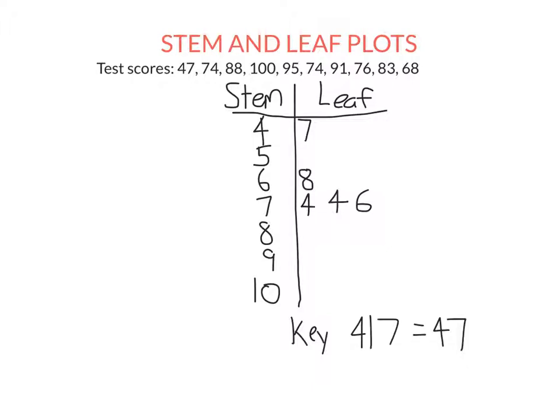So for the 80s, we have 88 and 83. For the 90s, we have 95 and 91. And for the 100, well, there's 10 tens, but no units. So we just put a zero there.